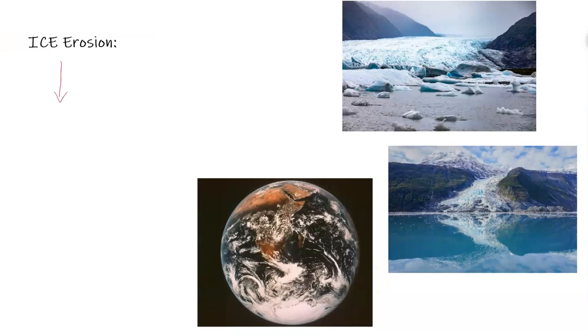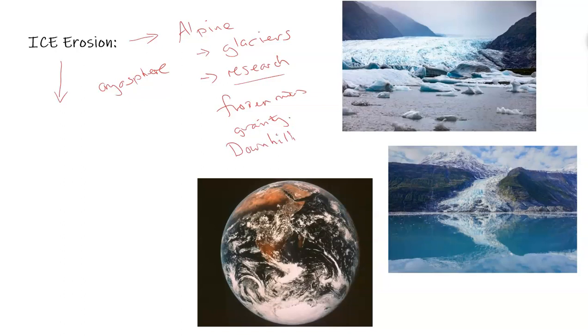So ice erosion really occurs in two separate scenarios. The first one is alpine. Alpine ice or the cryosphere denotes glaciers, and it's called alpine because the first research conducted on these glaciers was in Europe, in the Alps. Glaciers basically are frozen rivers that act under gravity, and there's an area where precipitation is going to add to the glacier, and it's going to flow downhill to a location where there's going to be a loss and the ice will melt. So we have a continual process of movement of ice and snow downhill.